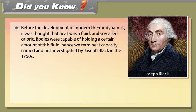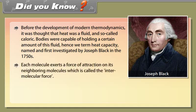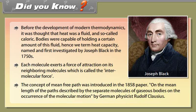Before the development of modern thermodynamics, it was thought that heat was a fluid and so-called caloric bodies were capable of holding a certain amount of this fluid, hence we term heat capacity, named and first investigated by Joseph Black in the 1750s. Each molecule exerts a force of attraction on its neighboring molecule which is called the intermolecular force. The concept of mean free path was introduced in an 1858 paper On the mean length of the paths described by the separate molecules of gaseous bodies on the occurrence of the molecular motion by German physicist Rudolf Clausius.